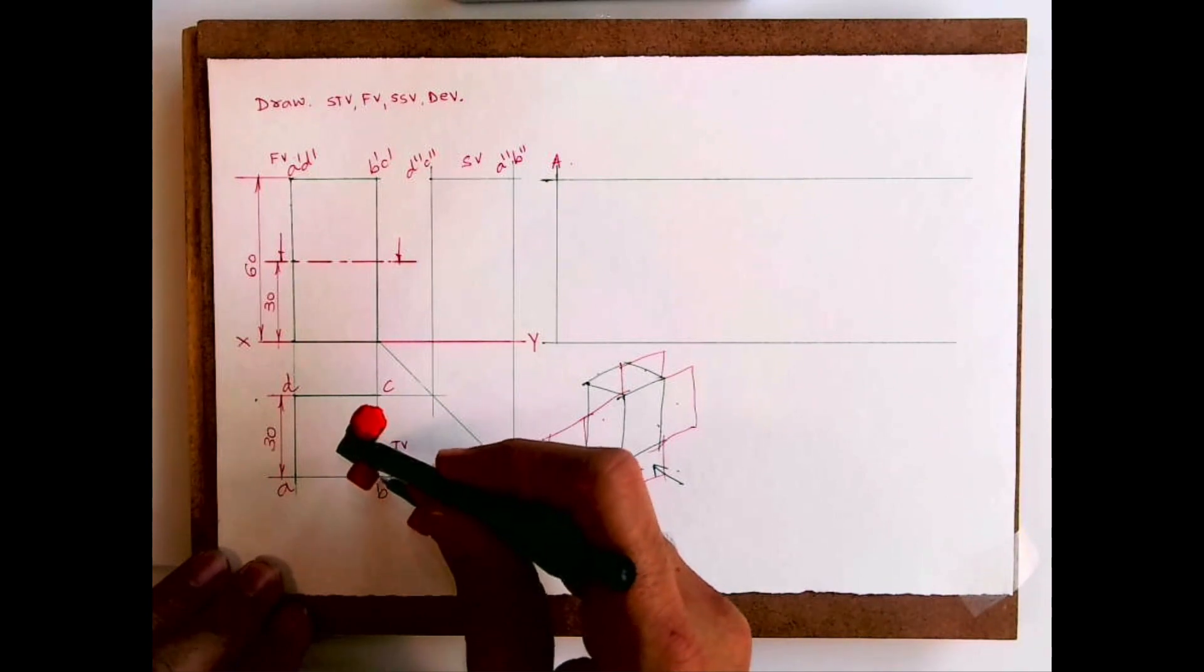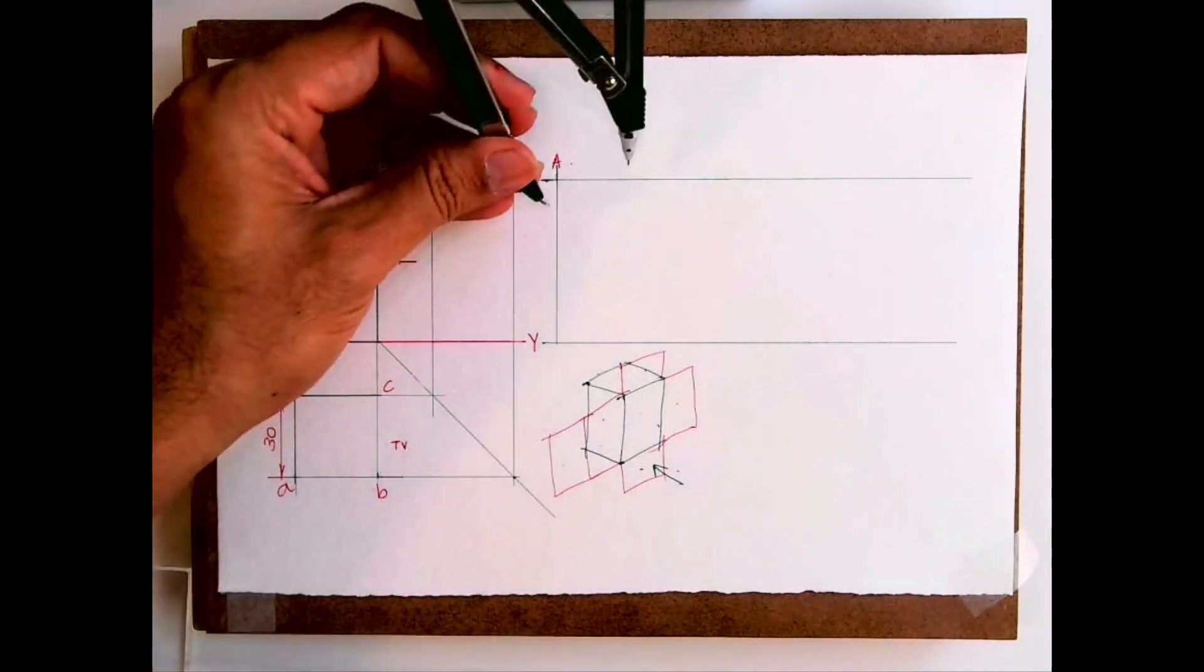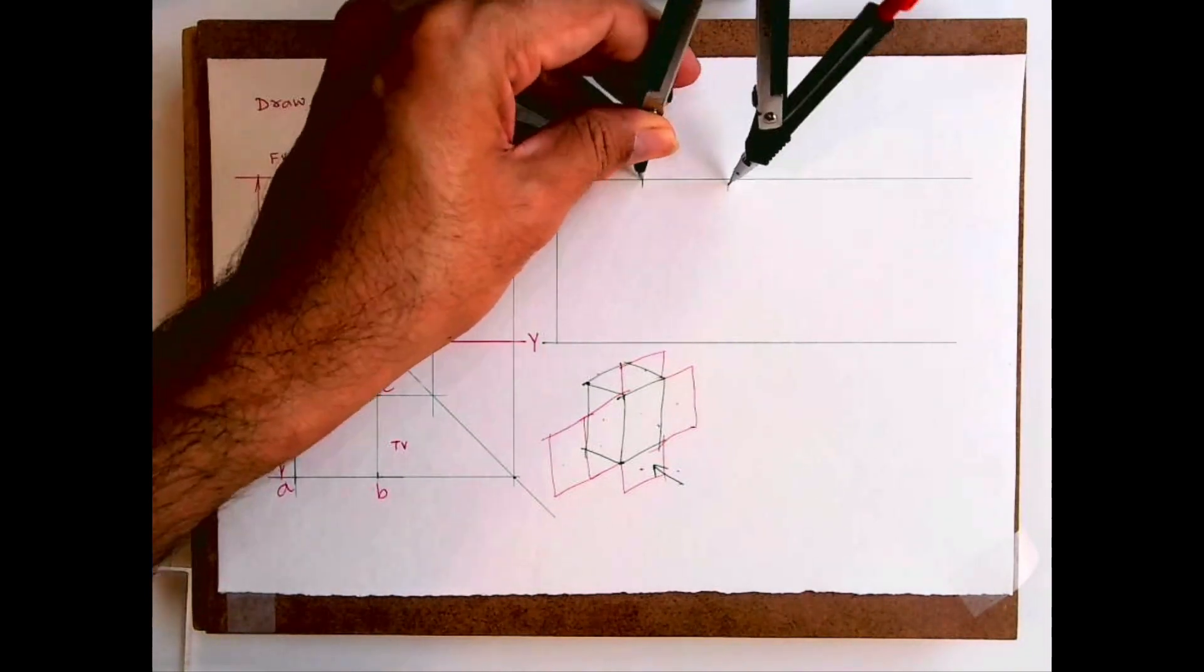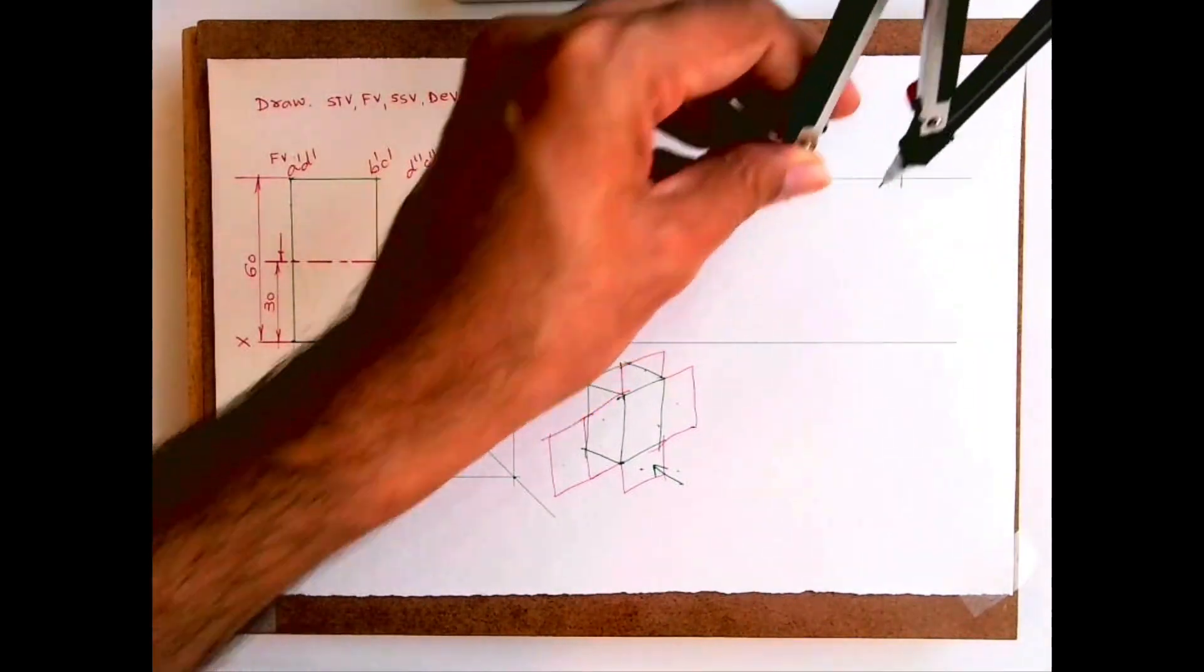So how will you cut? You take A to B in your compass, and from here you cut. You get B, C, D, A, four equal.